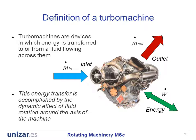Turbo machines are devices that exchange energy with a stream of fluid that traverses them. The fluid enters through the inlet and exits through the outlet. In the meanwhile, energy is exchanged between the stream and the machine by means of a shaft that makes it turn. The important thing to be recalled is that this energy transfer is accomplished by the dynamic effect of the fluid turning or made to turn by the blades or vanes.